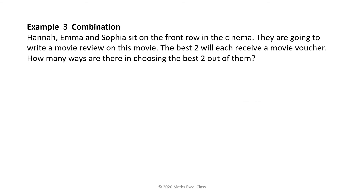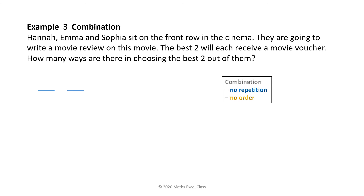Example 3. Hannah, Emma and Sophia sit on the front row in the cinema. They are going to write a movie review. The best two will each receive a movie voucher. How many ways are there in choosing the best two out of them? The two vouchers are given to two different girls — if Hannah gets the first one, she cannot get the second one, so we cannot repeat. Also, the two vouchers are identical, so it doesn't matter which one you get — there is no order.